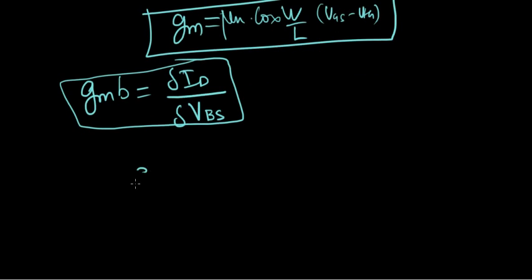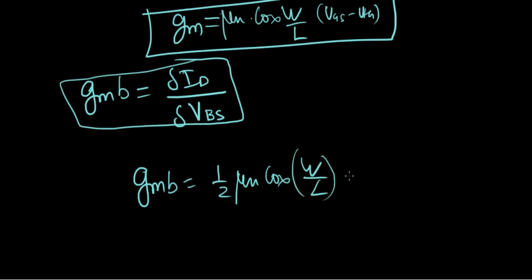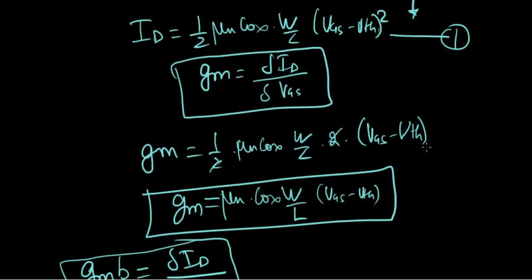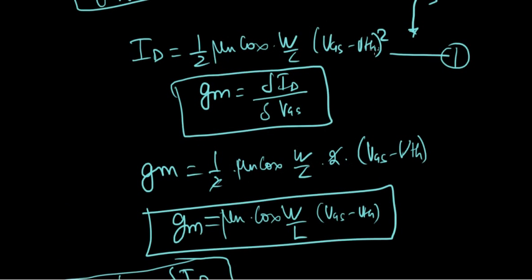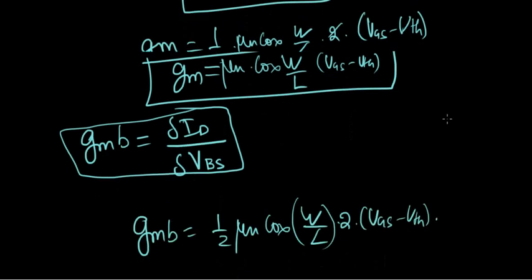gmb equals half mu_n C_ox W over L times 2 Vgs minus Vth times, and listen up here. What happened when we were doing it for gm was that Vth is constant and Vgs is what changes. With respect to Vgs at that place, Vth is considered constant. But when we consider body effect, there is a change in Vth, right? So we cannot ignore the differential of that. That is where we get minus delta Vth over delta Vbs. Yes, that's correct.